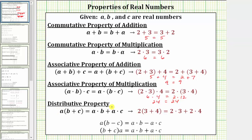Next, we have the distributive property, which is given as a times the quantity b plus c equals a times b plus a times c. In this property, we distribute the a, giving us a times b plus a times c. This is often referred to as multiplication across addition. As an example, we have two times the quantity three plus four, which is equal to two times three plus two times four, because we distribute the two.